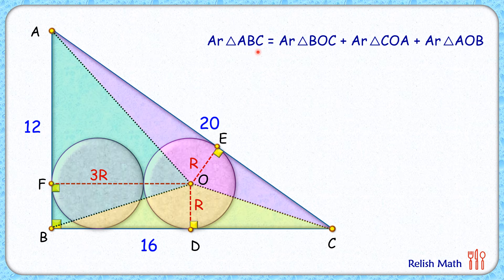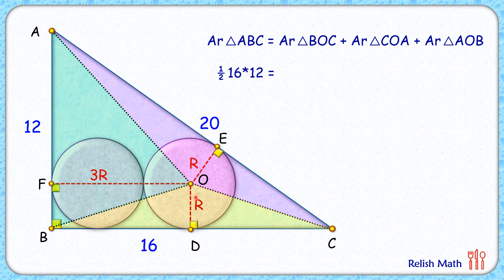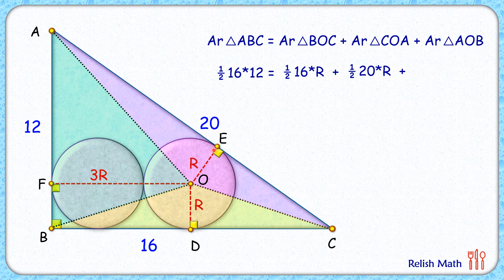The area of triangle ABC is half of base times height, or half of 16 times 12. For triangle BOC, the base length is 16 and the height is radius R, so its area is half of 16 times R. For triangle COA, the area is half of 20 times R. For triangle AOB, the base is 12 and the height is 3R.